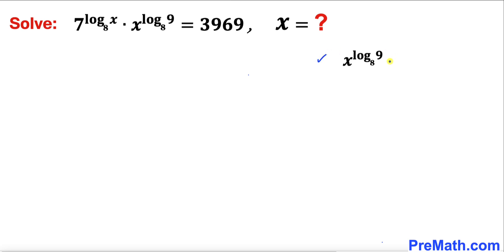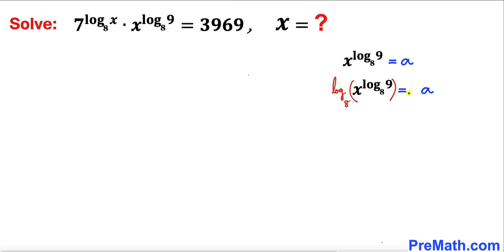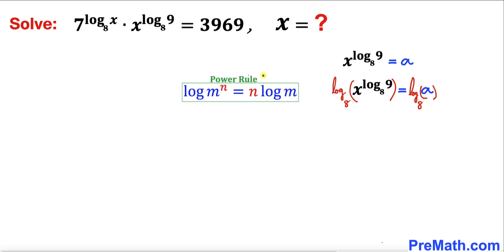Let me go ahead and set it equal to a. Let's suppose that x to the power log of 9 with base 8 is equal to some quantity a. Now let's take log with base 8 on both sides. And now let's recall the power rule — according to this rule, this exponent can be moved all the way to the front.